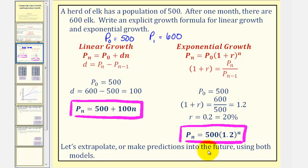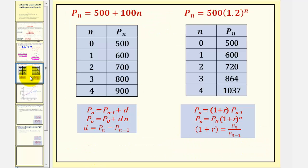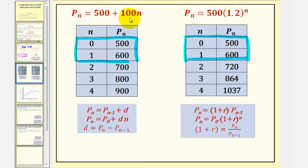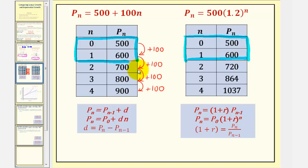Now let's extrapolate or make predictions into the future using both models. Here's our linear model and here's our exponential model. Notice how p sub zero and p sub one are the same for both models, because that was the given information. But each time period for linear growth, notice how the population increases by one hundred. For linear growth, as n increases by one each time, the population increases by one hundred. We could also express this using a recursive formula, where we'd have p sub n equals p sub n minus one plus one hundred.